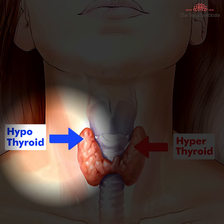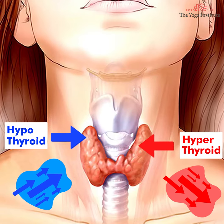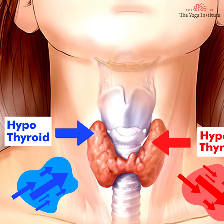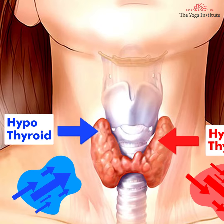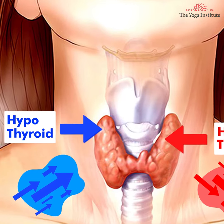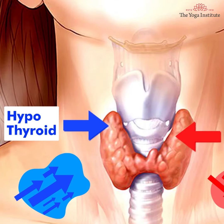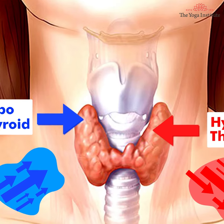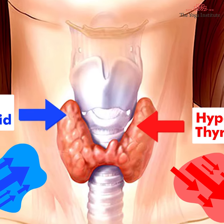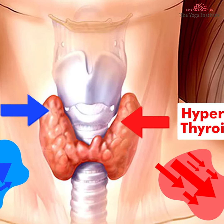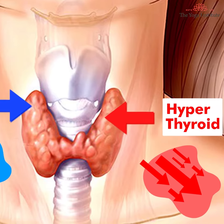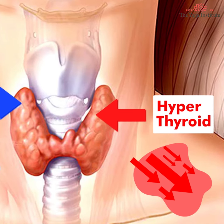Hypothyroidism is caused due to an underactive thyroid, which can decrease or slow down the bodily functions. Whereas in hyperthyroidism, you may find yourself with a lot more energy opposed to less, and you may also start losing weight.